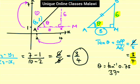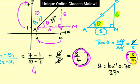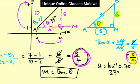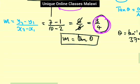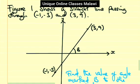Tan inverse of 0.75 gives us 36.8 degrees, so to the nearest degree that is 37 degrees. This shows the relationship: the tangent of a line equals the gradient of that straight line. So gradient m equals tan theta.